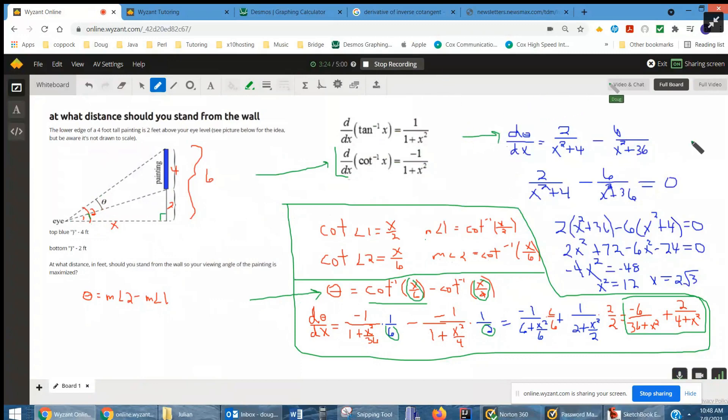And we want to know, when does that equal 0? Well, set it equal to 0, multiply every term by the LCD of both denominators. So you can picture an x squared plus 4, times x squared plus 36 up here.